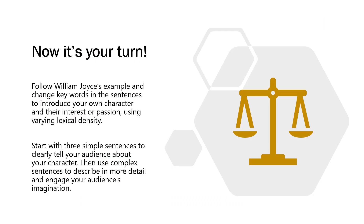Now it's your turn. Just like I did, you're going to follow William Joyce's example and change some key words in the sentences to introduce your own character and their interest or passion using varying lexical density. You get to think of whatever character you like and whatever their passion or interest is. Start with three simple sentences to clearly tell your audience about your character using low lexical density. Then use complex sentences to describe in more detail and engage your audience's imagination. I look forward to reading your introductions to your characters using varying lexical density.